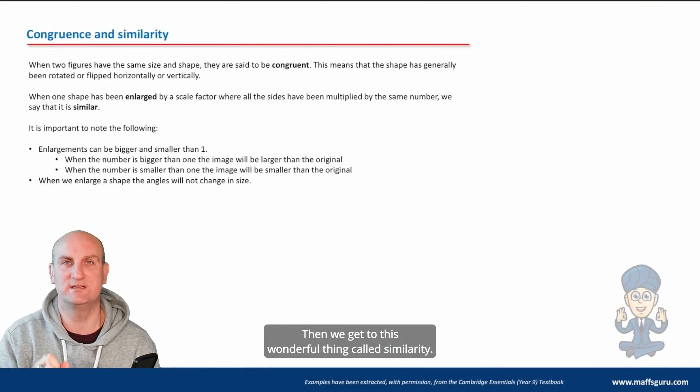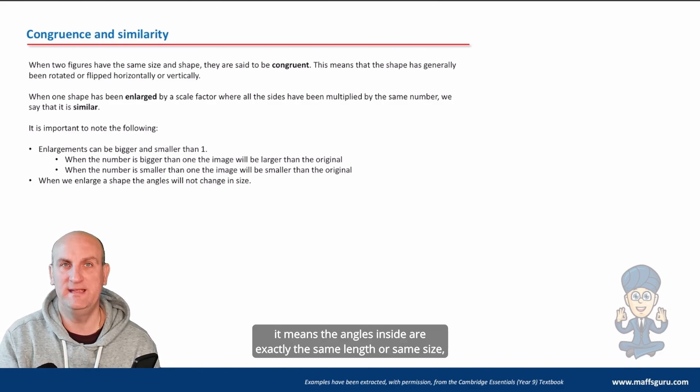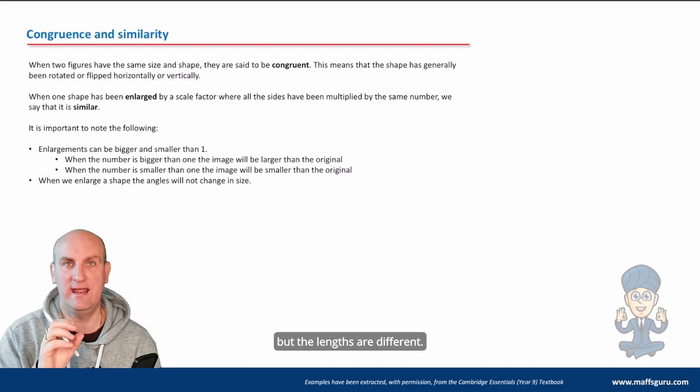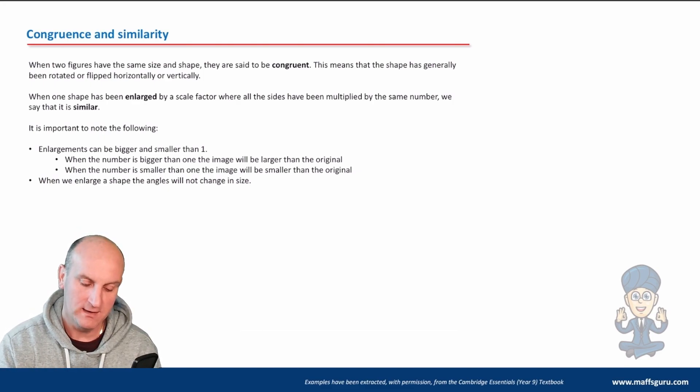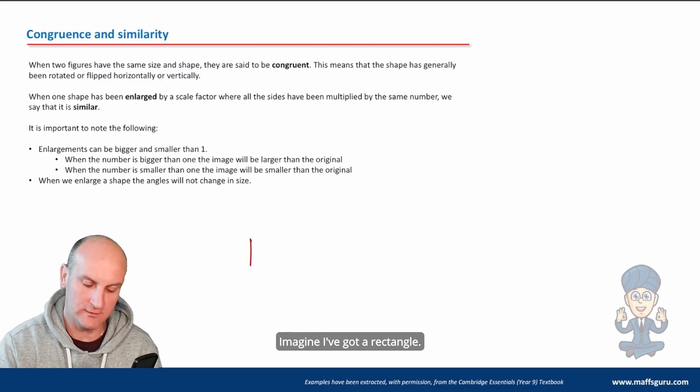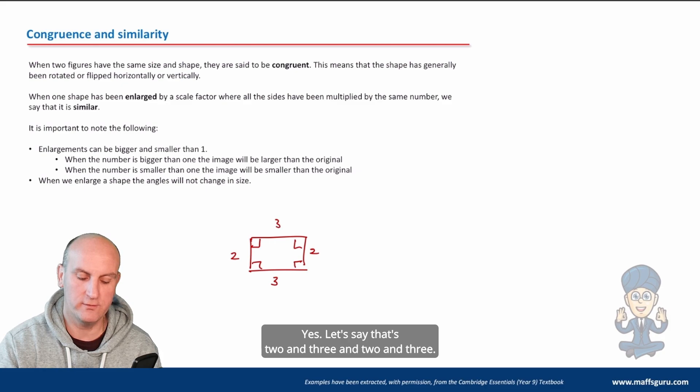Then we get to this wonderful thing called similarity. When things are similar, it means the angles inside are exactly the same size, but the lengths are different by a certain ratio. Now what I'm going to explain here is this: imagine I've got a rectangle. We know the angles inside that rectangle add up to 360 degrees. Let's say that's two and three and two and three.